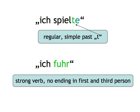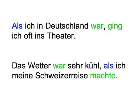Quite simple after all, isn't it? Remember when we spoke about conjunctions and mentioned one that is only used for past events and mostly with the simple past? Als is the German conjunction for the English 'when', used to refer to one-time events that happened in the past. Als ich in Deutschland war, ging ich oft ins Theater — when I was in Germany, I often went to the theater. Das Wetter war sehr kühl, als ich meine Schweizer Reise machte — the weather was very cool when I went on my trip to Switzerland. We'll use more als-sentences in the practice section later.